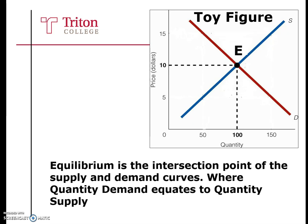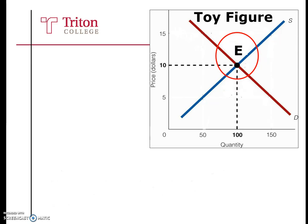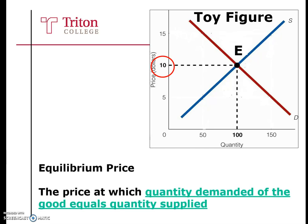The intersection point, where quantity demanded equates to quantity supplied, is called the equilibrium point. Remember, it is where quantity demanded equates to quantity supplied — not supply equals demand. There is a corresponding price associated to this point, and we call this price equilibrium: the price at which quantity demanded equates to quantity supplied.